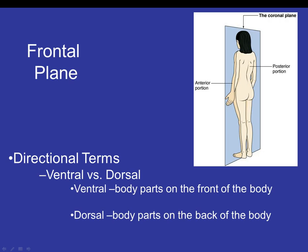Next is the frontal plane. The directional terms associated with it are ventral and dorsal. The coronal and frontal plane are the same thing — it divides you into front and back. Ventral refers to body parts on the front of the body; for instance, your belly button is on the ventral side. Dorsal means the back of the body; your gluteus maximus is on the dorsal side because it's on the back of the body.